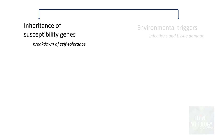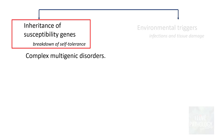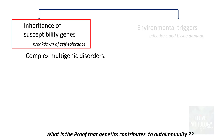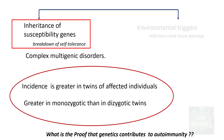Autoimmune diseases are complex multi-genic disorders, meaning multiple genes are involved in the development of autoimmunity. The proof that genetics contributes is that the incidence of autoimmune disease is greater in twins of affected individuals, and greater in monozygotic than in dizygotic twins.